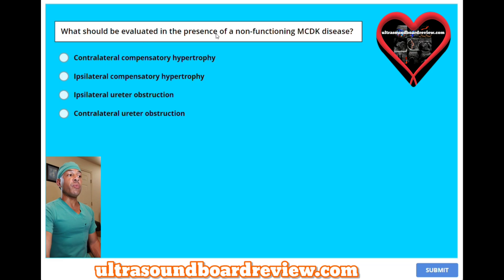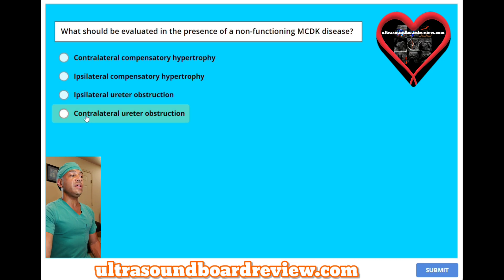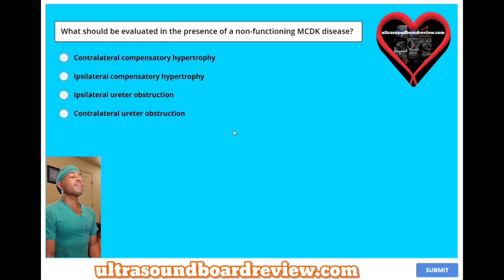What should be evaluated in the presence of a non-functioning multicystic dysplastic kidney disease? A, contralateral compensatory hypertrophy. B, ipsilateral compensatory hypertrophy. C, ipsilateral ureter obstruction. Or D, contralateral ureter obstruction? The answer is A, contralateral compensatory hypertrophy.